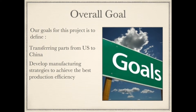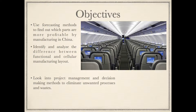Overall Goal: Our goal for this project is to define a strategy for transferring parts from the US to China and to develop manufacturing strategies to achieve the best production efficiency. Objectives: Use forecasting methods to find out which parts are more profitable to manufacture in China, identify and analyze the difference between functional and cellular manufacturing layout, and look into project management and decision-making methods to eliminate unwanted processes and waste.